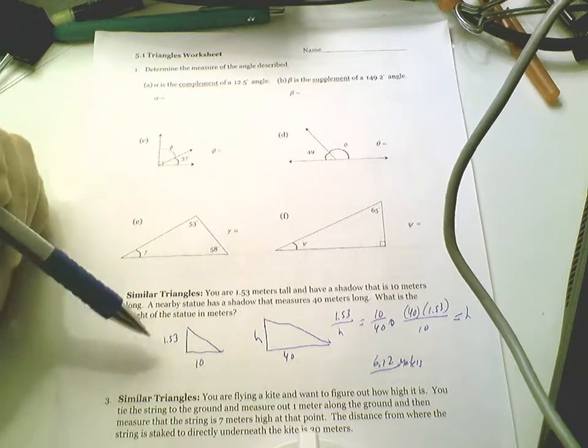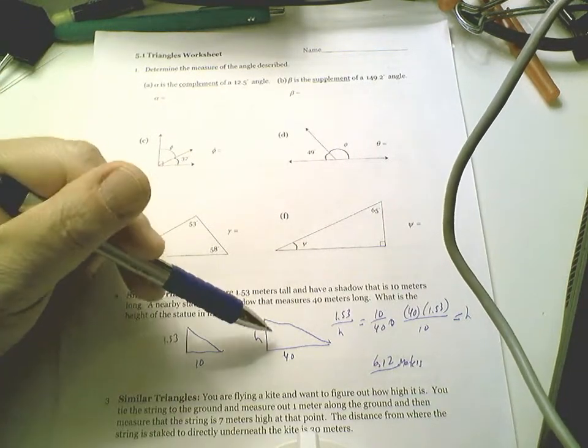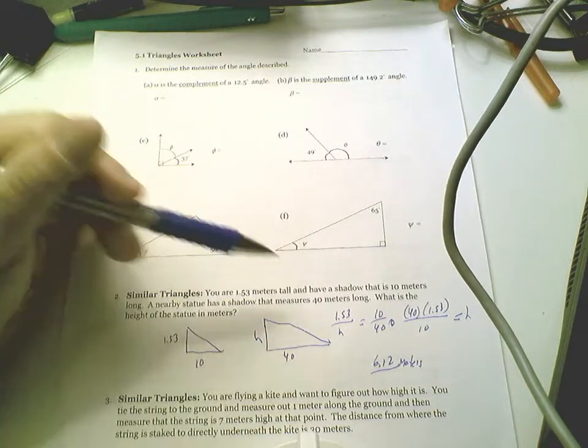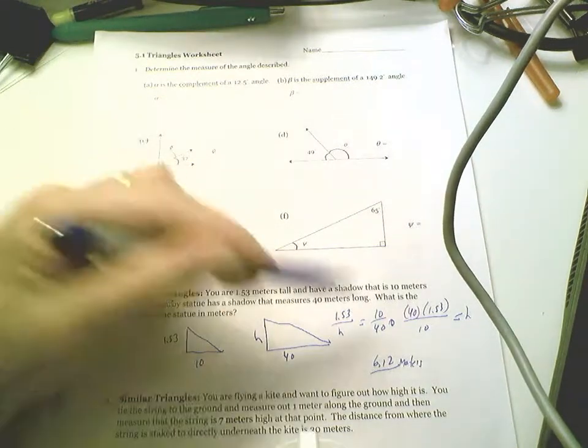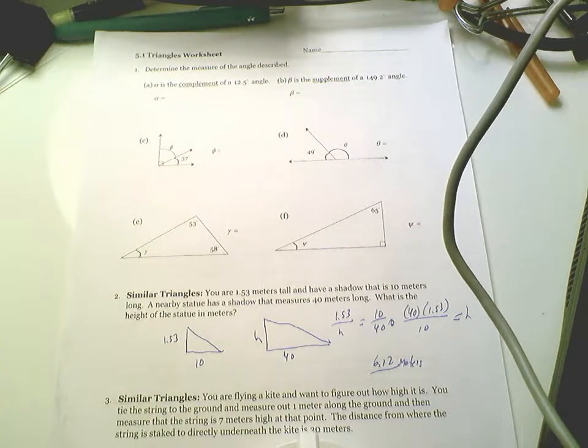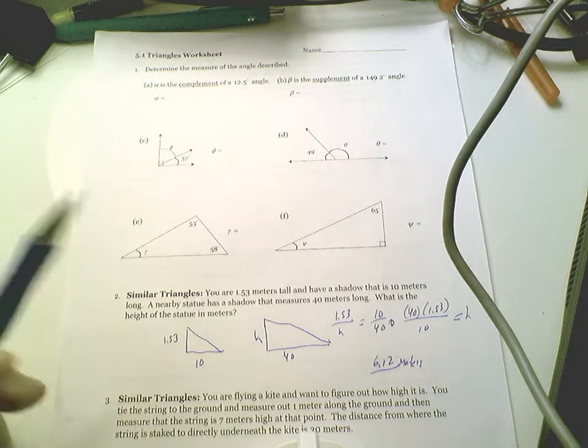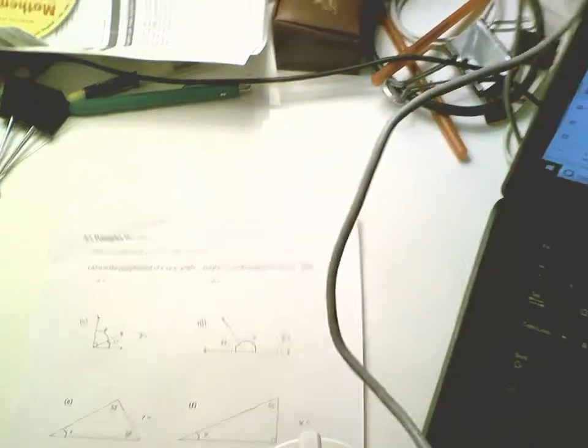That's how many meters we say this statue is. Another good way to think about it, in this triangle, every length is 4 times as much. 1.5 times 4, 6.12 meters. Take advantage of what the problem is giving you. You're looking at similar triangles.